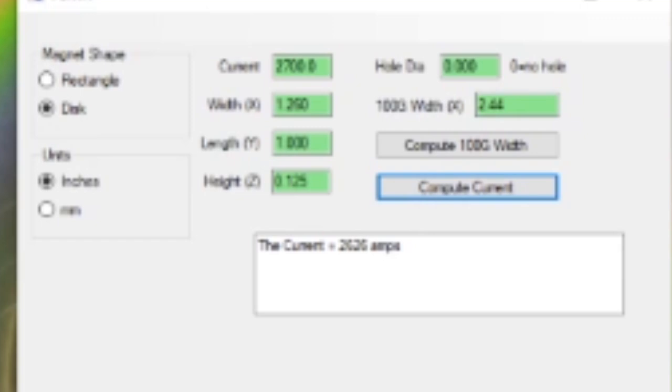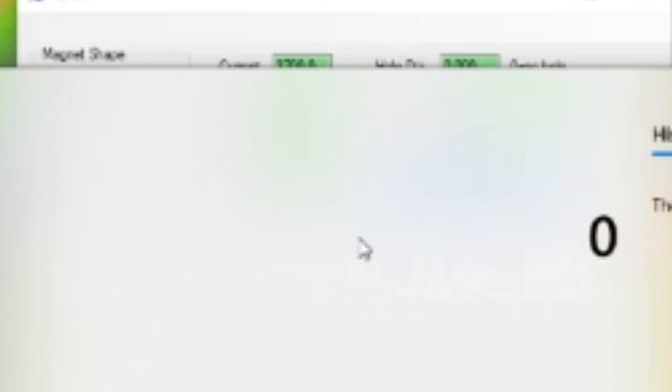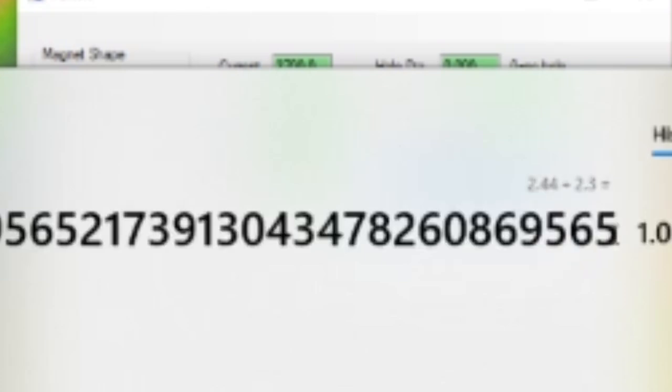So the film is kind of way off but that doesn't mean you couldn't put a scale factor on this tool. So 2.44 divided by 2.3.